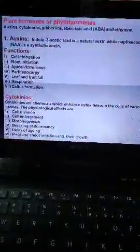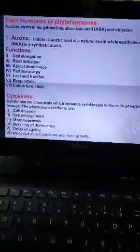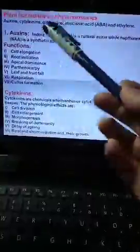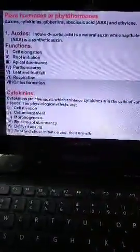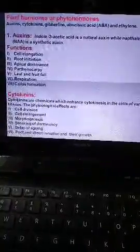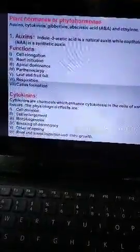The next thing is auxins, cytokinins, gibberellins, abscisic acid and ethylene. Auxins - here's chemical substances like indole acetic acid, indole butyric acid and naphthalene acetic acid. We can enhance the growth of stem or coleoptile sections.